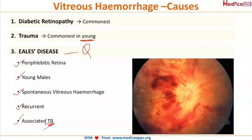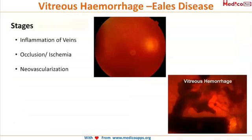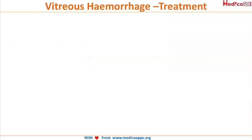Whenever you think about Eales disease, please think about tuberculosis. Eales disease has three stages: first, inflammation of the veins (periphlebitis); second, occlusion resulting in ischemia; and third, neovascularization, which causes the vitreous haemorrhage. Treatment involves systemic steroids to reduce inflammation, and because it is most commonly associated with tuberculosis, you also give anti-tubercular treatment.